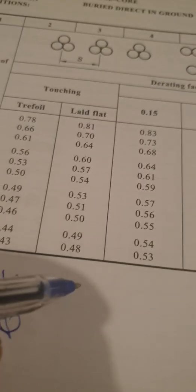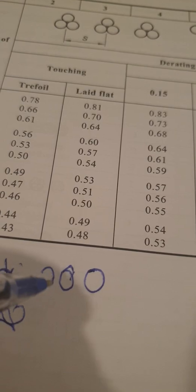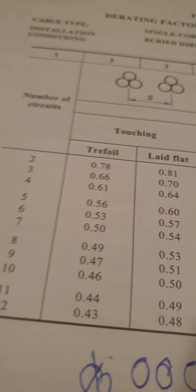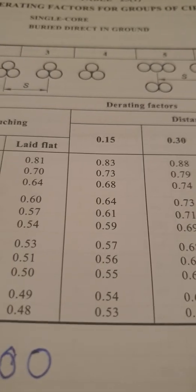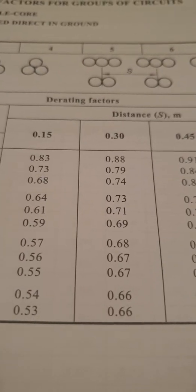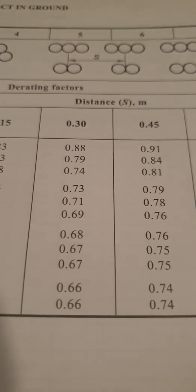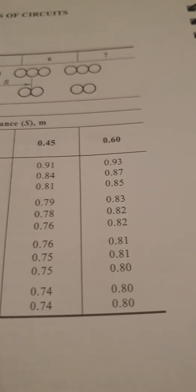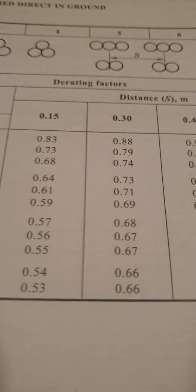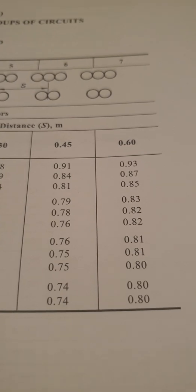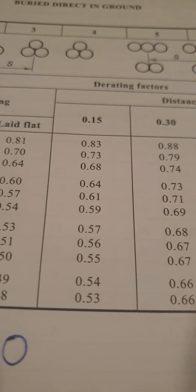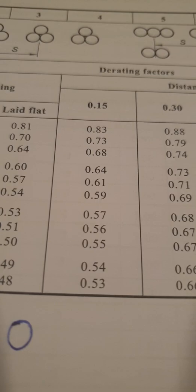Two circuits - there's a difference between them: 0.78 and then laying flat 0.81. Then we get to the distance: 0.85. So distance apart - if the cables are laying 0.15, 0.3, and then we go through from 150mm, 450mm, 600mm, 300mm. So as they get further apart, the percentage climbs up, which means you're going to get more out of it. The more closer they are together, the percentage goes down. So look at the 0.83 as a percentage value.